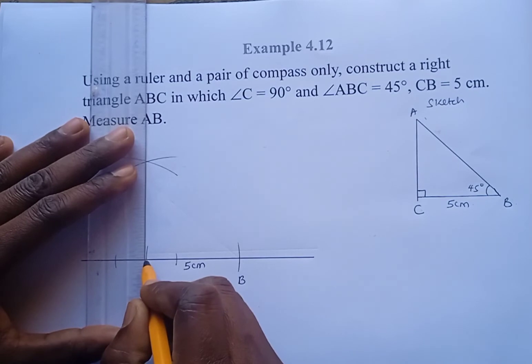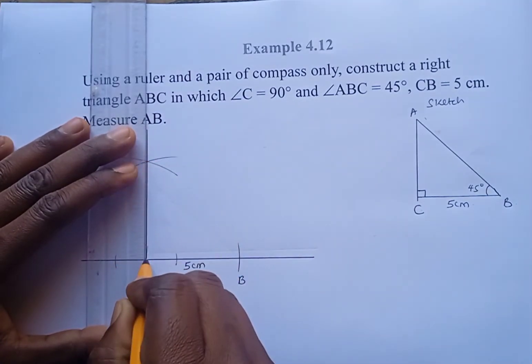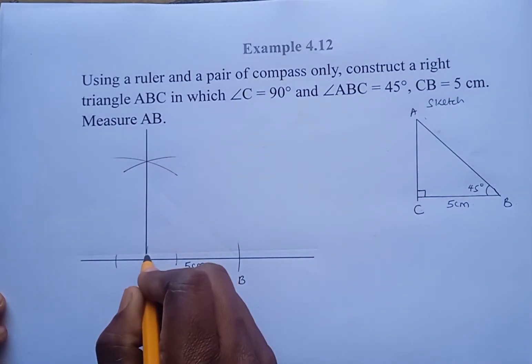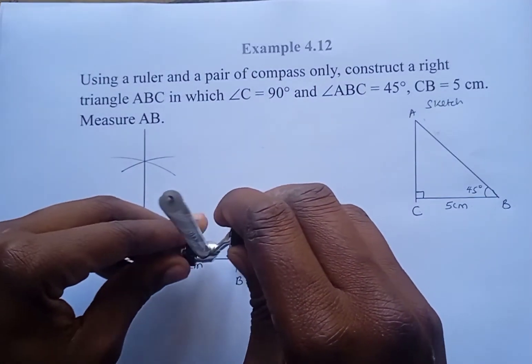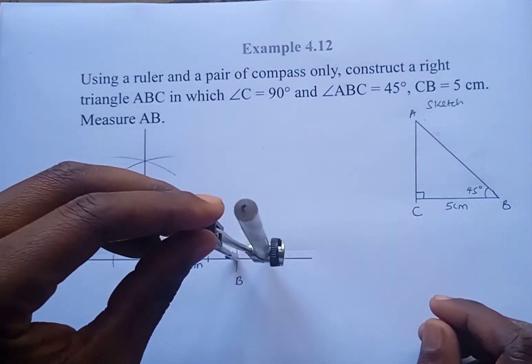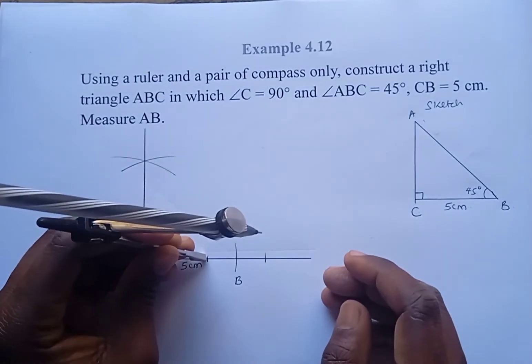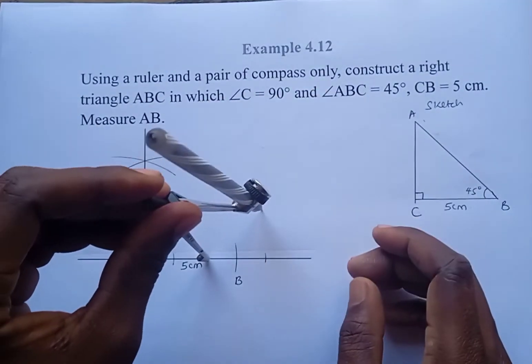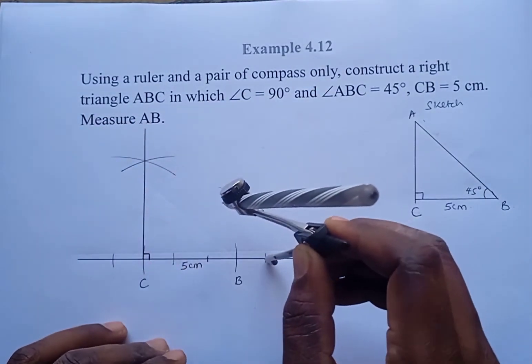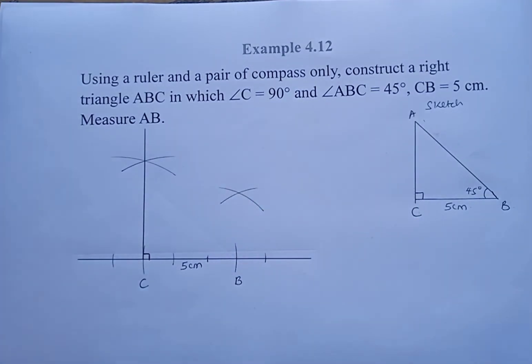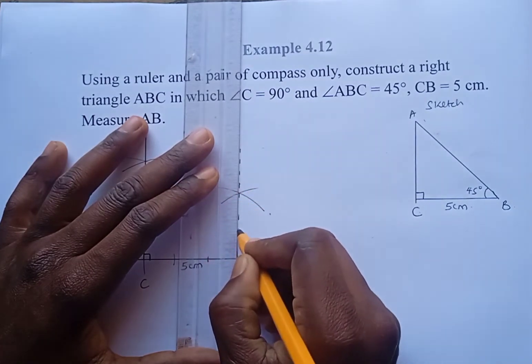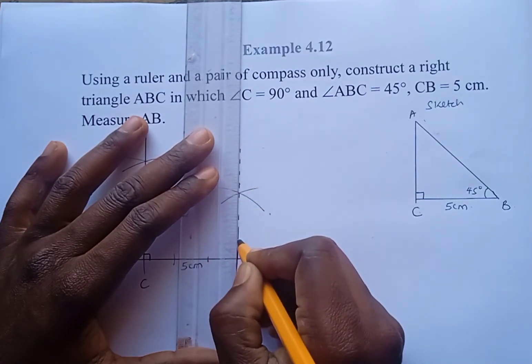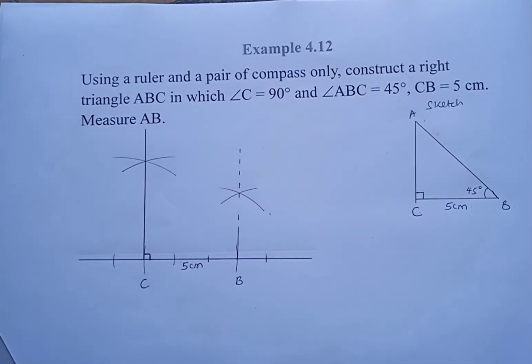So this is 90 degrees. Then we construct 45 degrees at B. So to construct 45 degrees we start with 90 degrees and then bisect the 90 degrees to get 45 degrees. You can watch the construction of 45 degrees using the link which will be given in the description section below.